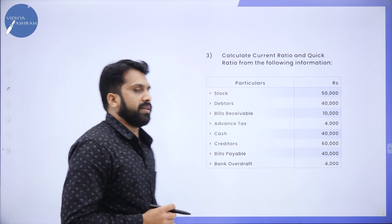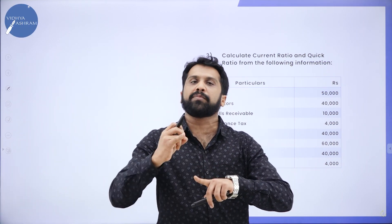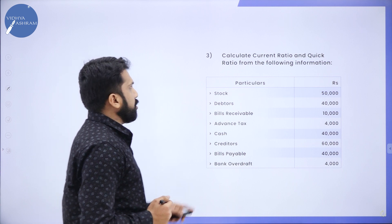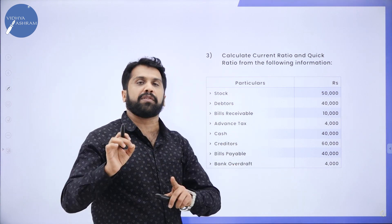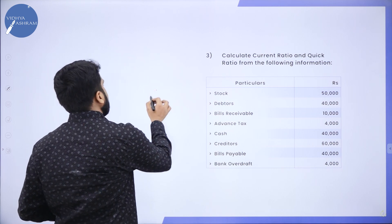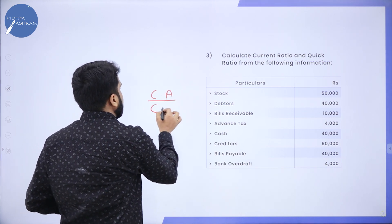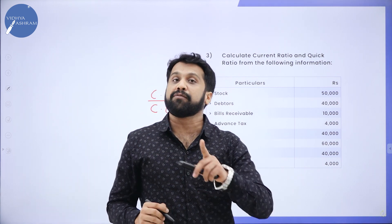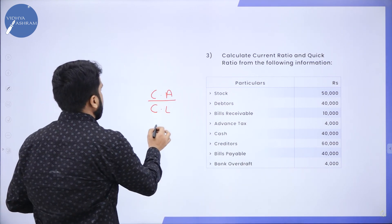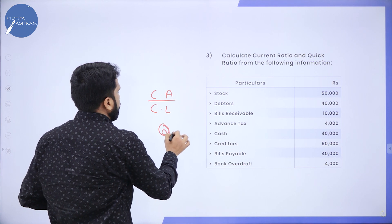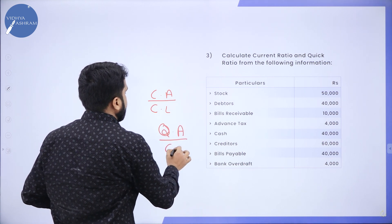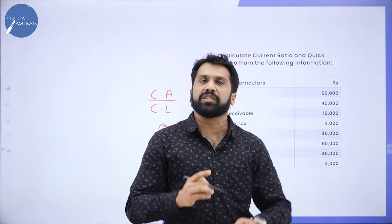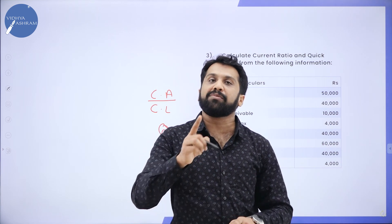Now, problem number 3. The first and second problems we completed, and now we are doing problem number 3. Calculate Current Ratio as well as Quick Ratio. The formula for Current Ratio is Current Asset divided by Current Liability. For Quick Ratio, the formula is Quick Asset divided by Current Liability. Current Liability will not change in both formulas — it will remain the same.